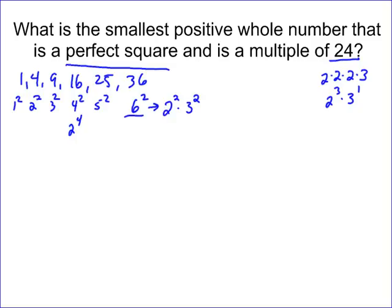If something is a multiple of 24, it has to have this inside of it, meaning it's got to be part of the prime factorization. If something is a perfect square, then it has to have even powers. So essentially, what we need is something that includes this that has even powers.